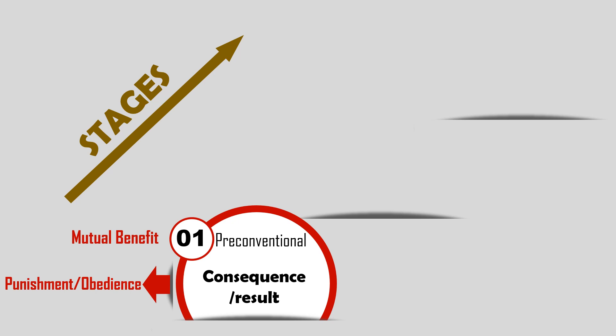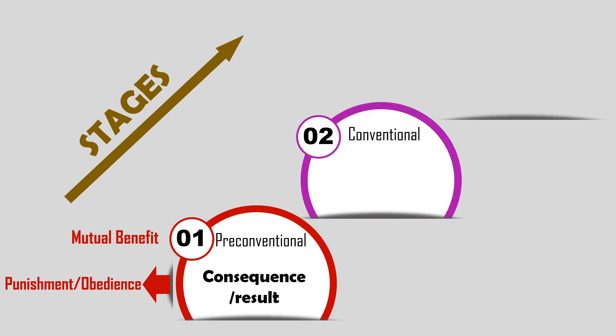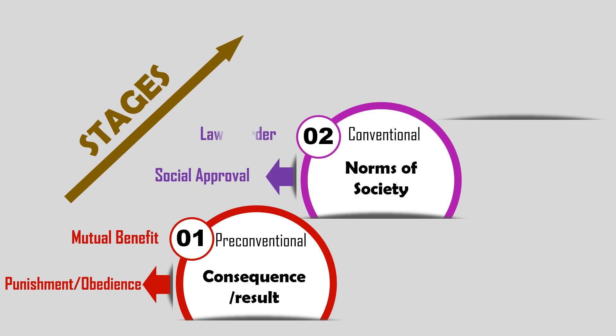The second level is conventional. Moral reasoning is based on the conventions or norms of society. This may include approval of others, law, and order. The stages are: Stage 3 — Social Approval, and Stage 4 — Law and Order.